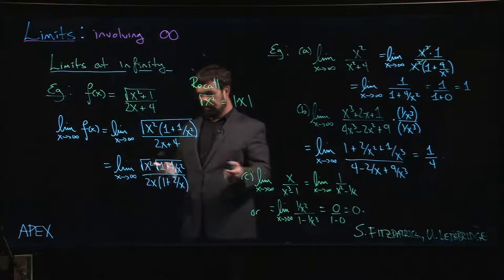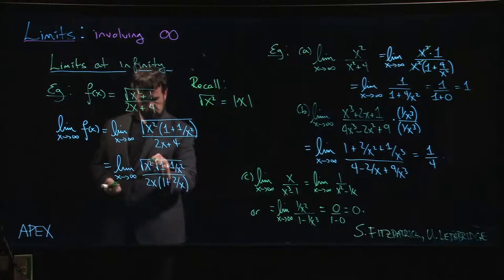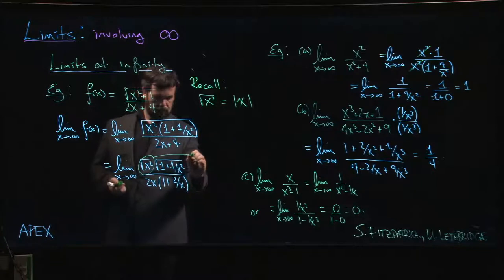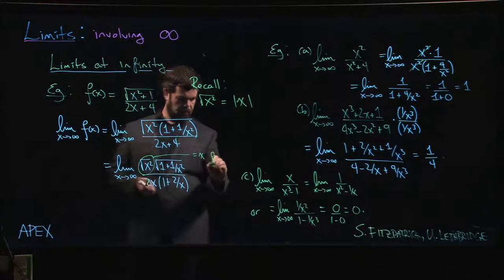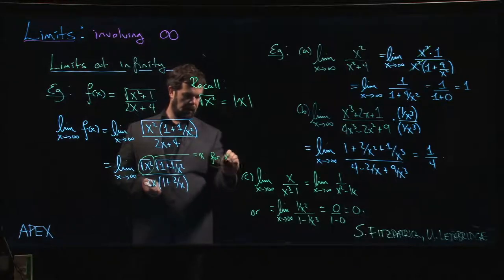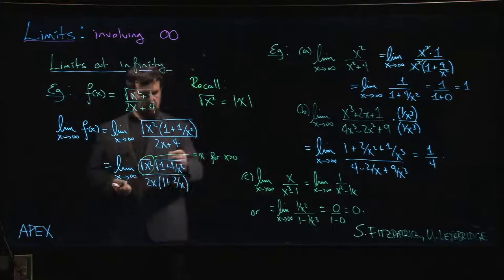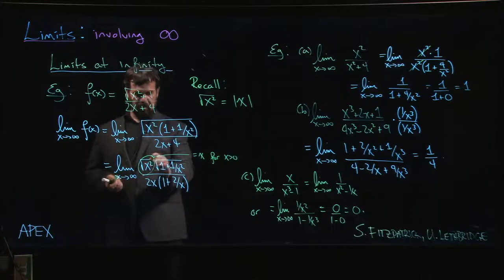So in this case, because x is going to plus infinity, I think I can assume that x is bigger than zero. So this is just equal to x, and because it's equal to x, I can cancel it.